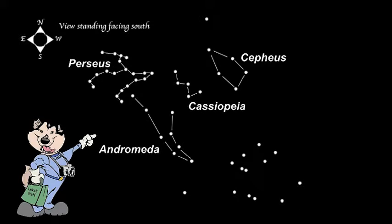Find Cassiopeia by finding the North Star and the Big Dipper. Cassiopeia looks like a W and is on the other side of the North Star from the Big Dipper.